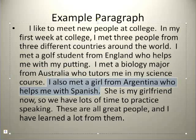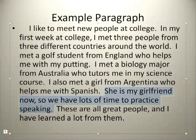Here is a third example. I also met a girl from Argentina who helps me with Spanish. So here we have someone, a native speaker of a foreign language, who can help this person as he tries to master a foreign language. Here is some additional information: he seems to like this girl from Argentina. She has become his girlfriend, and so they have lots of opportunity for him to practice speaking Spanish.